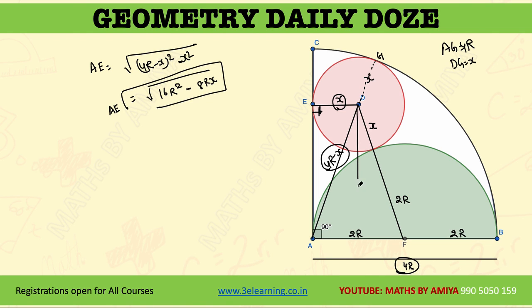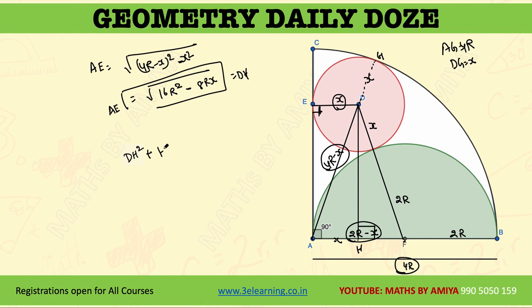Drop a perpendicular DH. We know DH = AE. If DE = x, then from AF we have 2r, so AH = x and HF = 2r − x.